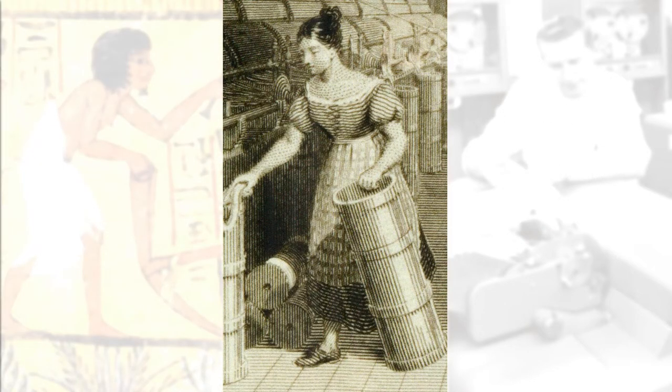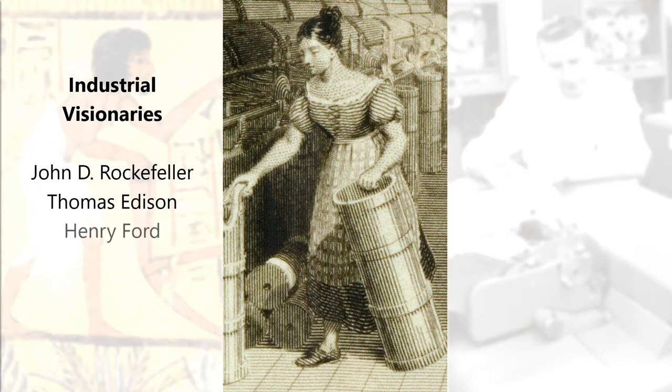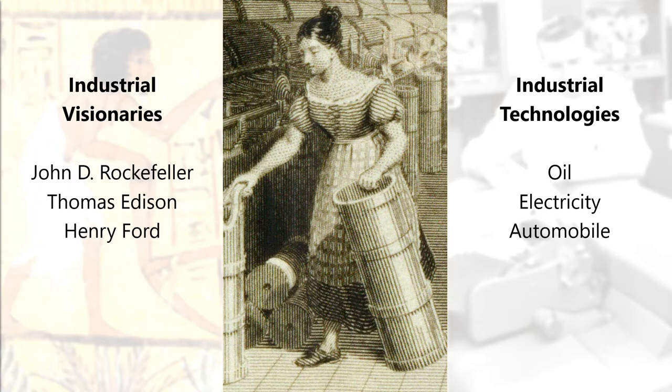During the industrial revolution, we had visionaries like John D. Rockefeller, Thomas Edison, and Henry Ford. They all capitalized on the key technologies of the industrial era. As a result, they became some of the wealthiest and most influential people on the planet.